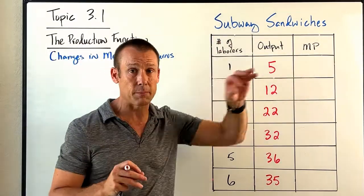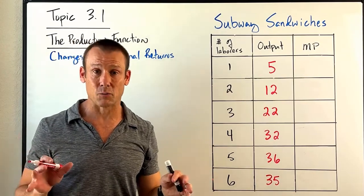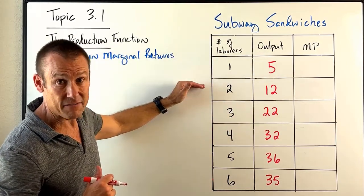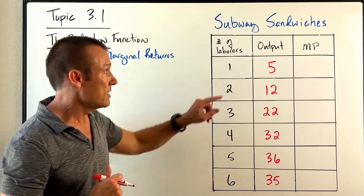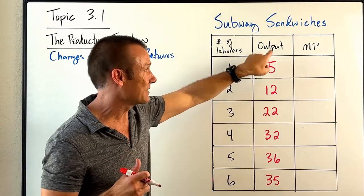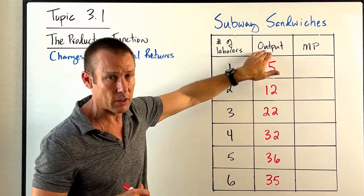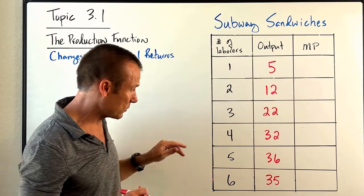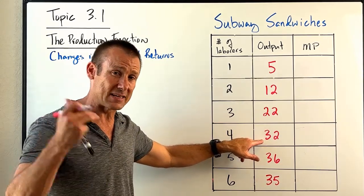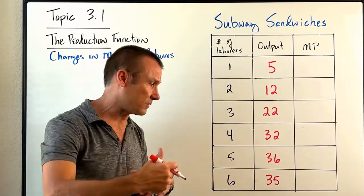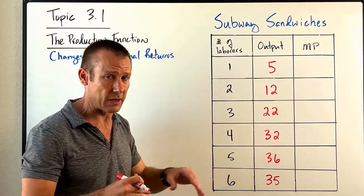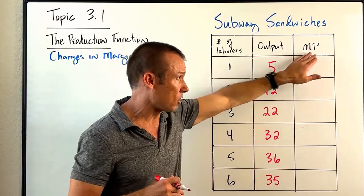What we're going to be looking at is a Subway sandwich shop, because pretty much all of us have been in one. In this first column, you can see I'm changing that variable input by one. The second column is output — you might also see it labeled as total product in your textbook. So when we get to the row where four people are working, they can make 32 sandwiches in total — on a per-hour basis. Here's the really important column: marginal product.